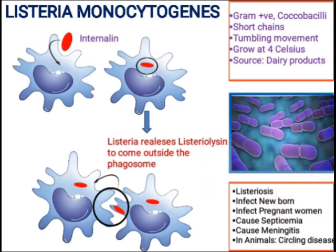When this pathogenicity results in disease, that condition is called listeriosis. In listeriosis, the main condition is meningitis, which is inflammation of the brain.